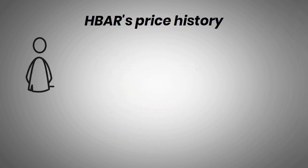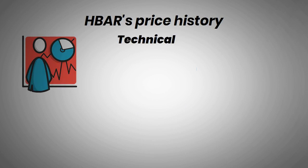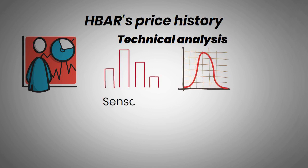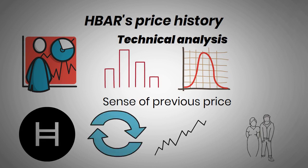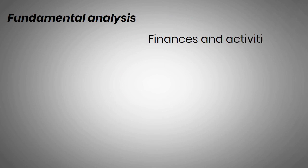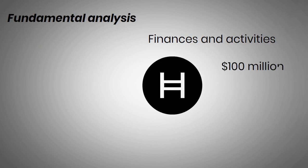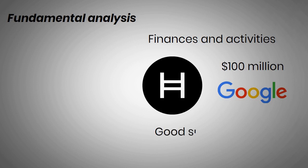HBAR's price history can be analyzed with many of the same techniques as stock market analysis. Technical analysis involves using various indicators while studying price charts to make sense of previous price movements. With HBAR, as with many other tradable assets, large price swings are often accompanied by spikes in trading volume, as a large number of users buy or sell their coins on exchanges. Fundamental analysis looks at the finances and activities of a company, as well as the state of the wider market and economy. Hedera Hashgraph raised $100 million in its ICO and is governed by leading organizations such as Google, IBM, Boeing, EDF, and University College London, which could be a good sign of the project's fundamentals.